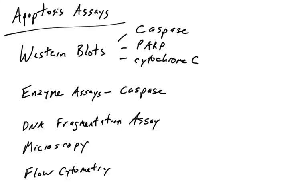This is a continuing set of videos on different types of apoptosis assays. In the previous videos we talked about Western blotting to detect changes in caspases, PARP protein, or cytochrome C.